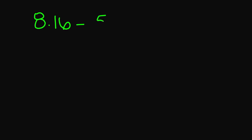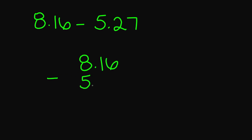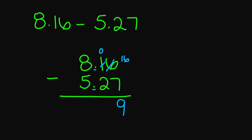Let's try 8.16 minus 5.27. Starting with 6 minus 7 — can't do that. This 1 becomes a 0 and this 6 becomes a 16. 16 minus 7 is 9. Then 0 minus 2 — can't do that, I borrow from the ones place. This 8 becomes a 7, and this 0 in the tenths becomes a 10. 10 minus 2 is 8. Bring that decimal down. 7 minus 5 is 2. Final answer is 2.89.